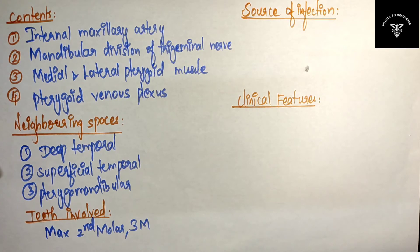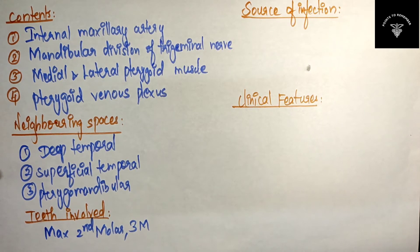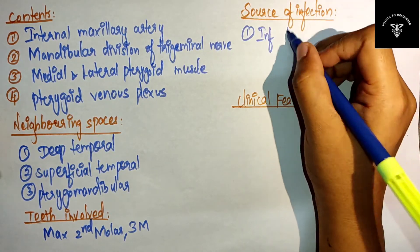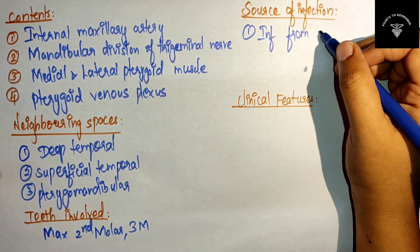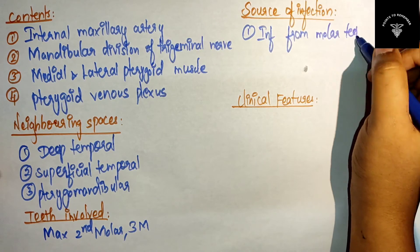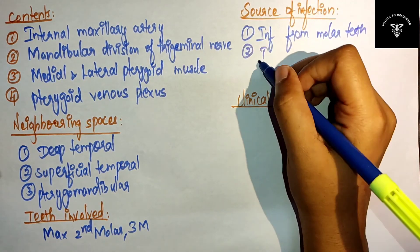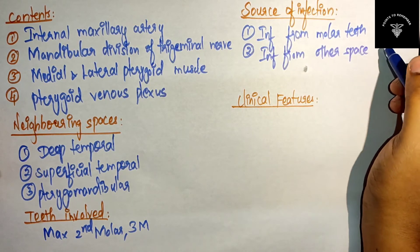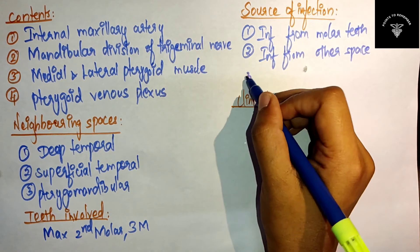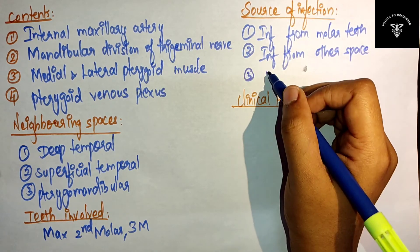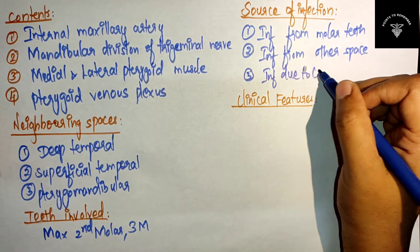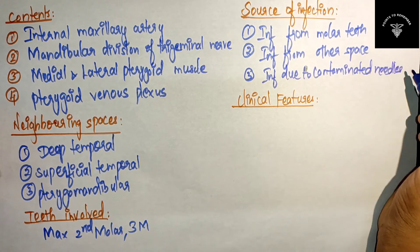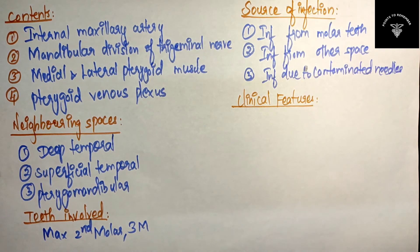The sources of infection of infratemporal space infection include: first, infection from molar teeth; second, infection spreading from other spaces such as the pterygomandibular or submasseteric space; and third, infection due to contaminated needles.